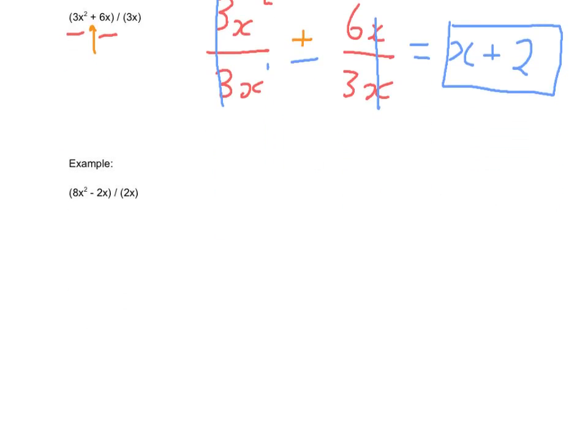So again, we're going to write each one separately. So 8x squared is one term, 2x is the other, negative 2x is the other. And we're going to divide each of those by that denominator of 2x. So 2x divided by 2x. And we look here for our operation is a minus.